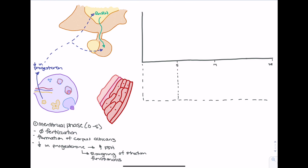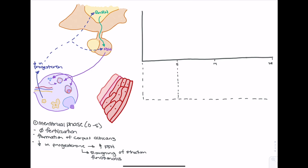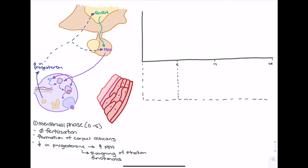GnRH also stimulates the release of FSH, and we start to see an increase in follicle-stimulating hormone. As FSH levels increase, it starts to stimulate the developing follicles. So a decrease in progesterone leads to an increase in GnRH and an increase in follicle-stimulating hormone, which starts to stimulate these follicles and allow them to progress along their maturation — some becoming primary or secondary follicles until one follicle becomes mature. It's important to remember that we generally only see one mature follicle at a time.